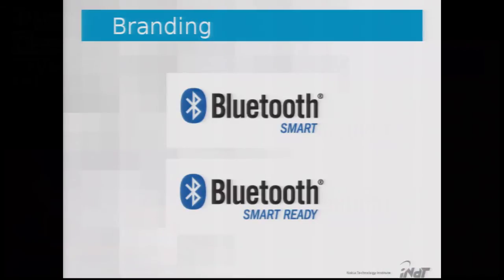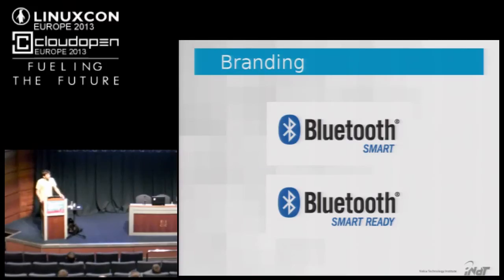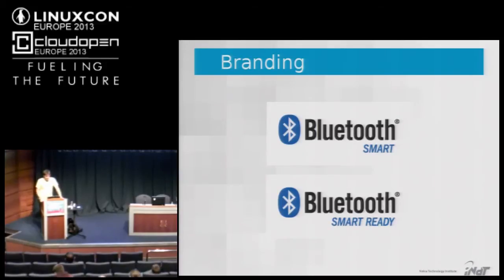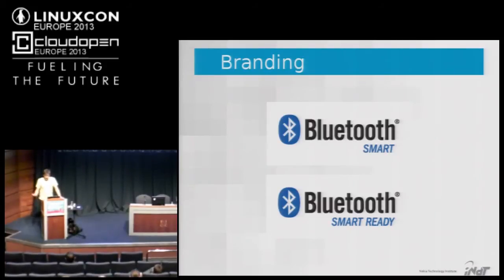They also came up with new branding that confused people a bit. Bluetooth Smart devices are devices that use Bluetooth Low Energy to communicate, mostly on the peripheral side. Bluetooth Smart Ready devices are classical Bluetooth devices that can also talk to Bluetooth Smart devices — basically dual-mode devices with both classical Bluetooth and Bluetooth Low Energy. That's mostly computers and mobile phones.